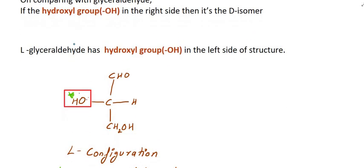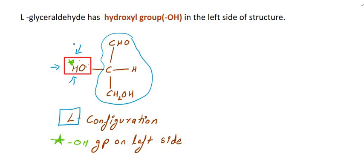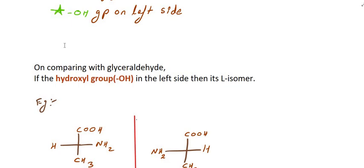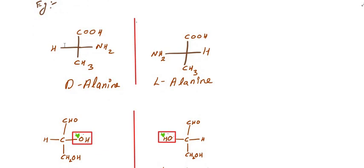When OH is on the left side, we will assign the L configuration. We can also change the structure of this configuration. So in this case, the opposite positioning of the groups gives us the L configuration.